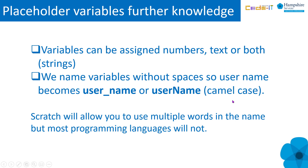Variables can be assigned numbers, text, or both — strings, really. We name variables without spaces, so 'user name' becomes 'user_name' with an underscore, or 'userName' with a capital N for the second word. Variables are a complex concept, but careful unpacking and repacking will ensure that more pupils will use them in useful and mindful ways.